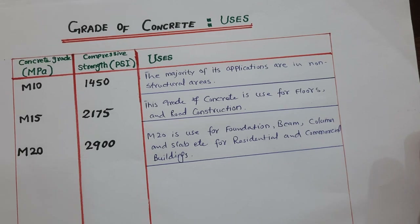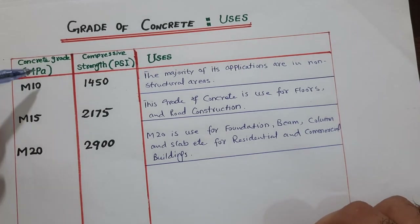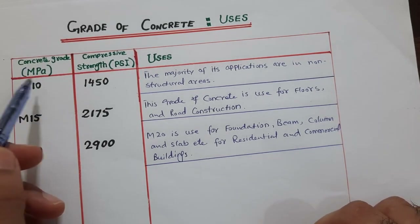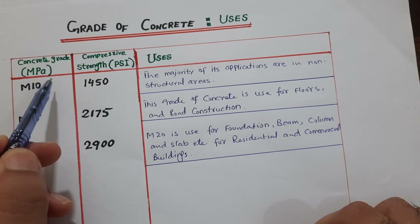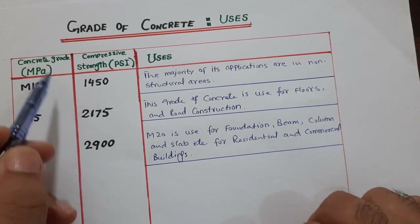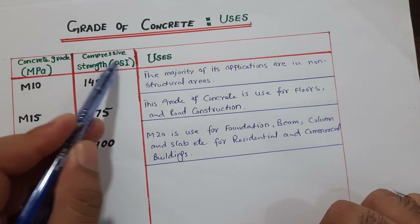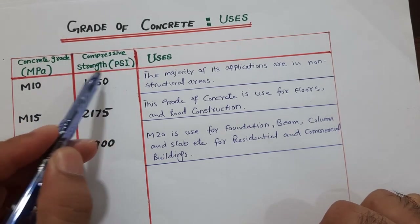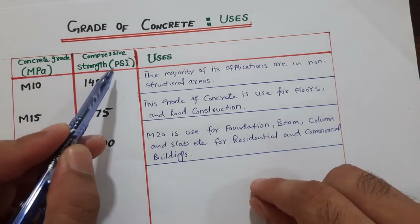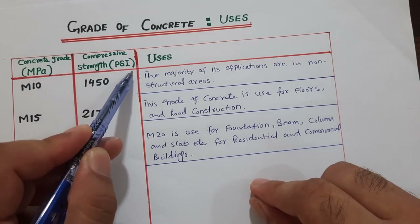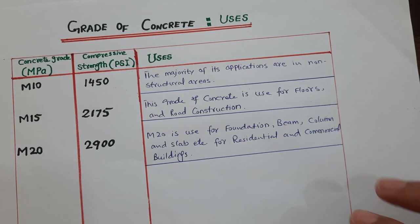Here you can see a table with the concrete grade column, MPa (megapascal) values, the compressive strength of concrete in PSI, and its uses.